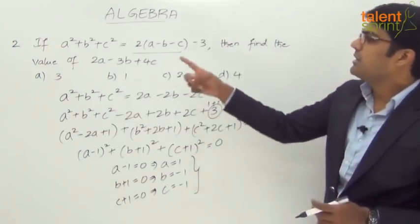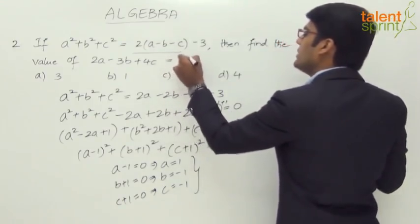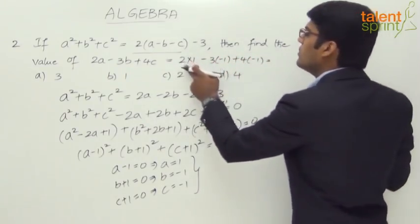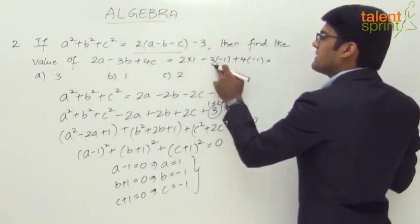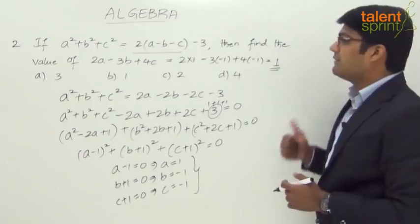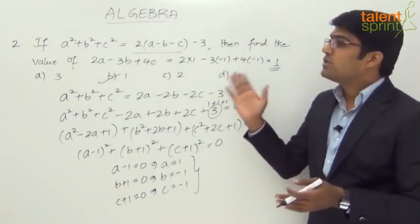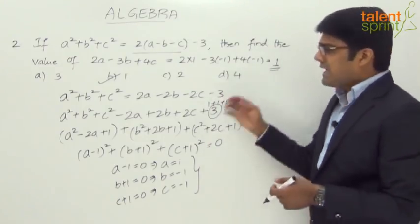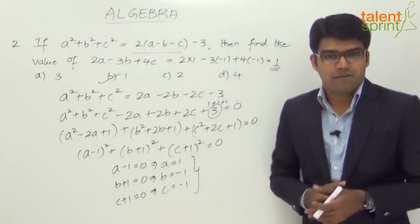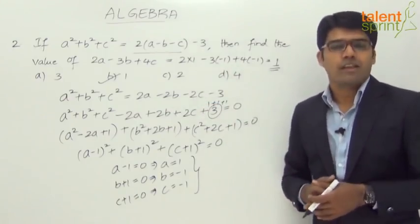Now substituting into the required expression 2a - 3b + 4c: we get 2(1) - 3(-1) + 4(-1) = 2 + 3 - 4 = 1. So the answer is 1, which is option B. For such typical questions, we either find a, b, c by substitution or reduce the given equation into a recognizable form — here perfect squares — to determine the values and substitute into the required expression.